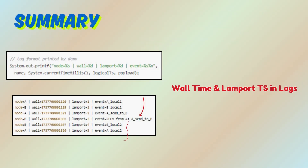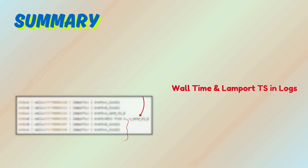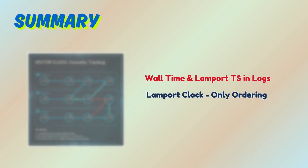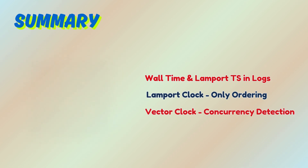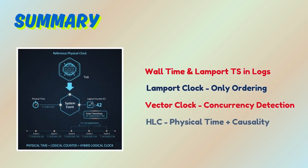Quick checklist before you go: include both wall and logical timestamps in logs; use Lamport clocks when you only need ordering; use vector clocks when you must detect concurrency; and consider HLC when you need physical time plus causality.